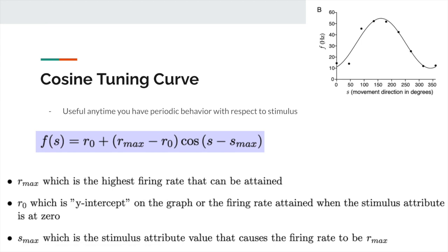The cosine tuning curve is widely used when there is periodic behavior with respect to a stimulus. Note that it can also be used where the Gaussian is used, as it achieves a similar shape within a certain window — if you zoom into a specific part of the cosine it looks fairly similar to a Gaussian. You have to choose based on the scenario.